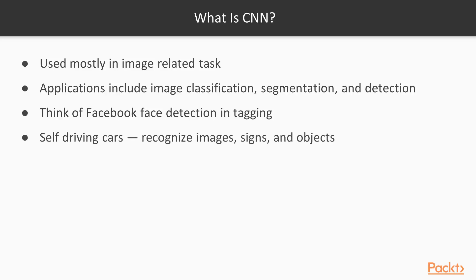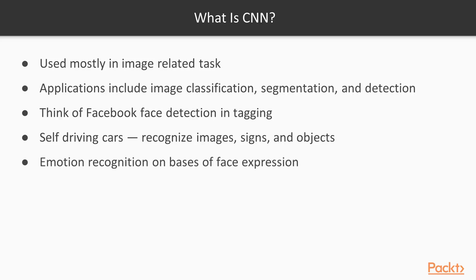Image detection is also required for self-driving cars. When a car is self-driving, it needs to recognize many images while on the road — it needs to detect objects, traffic signs, and deal with moving objects. Another aspect of CNN is emotion recognition. It can recognize emotion from faces. If there is an image of a person's face who is happy or smiling, it can recognize that the emotion is happiness. Similarly, it can also recognize sadness and many other emotions using facial expressions.